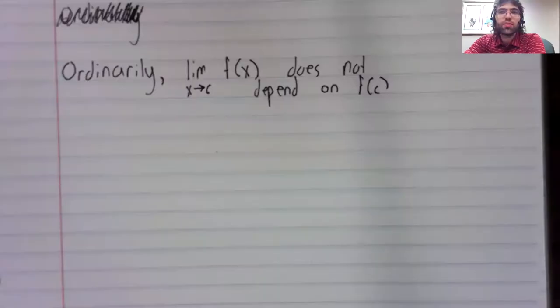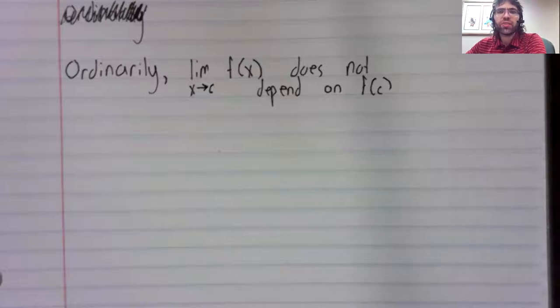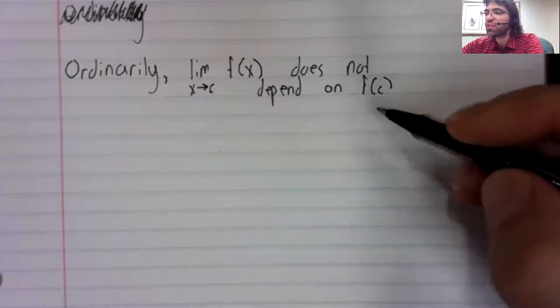And in this video, we'll look at two of the exceptions. So, ordinarily, the limit as x approaches c of f of x does not depend on f of c.